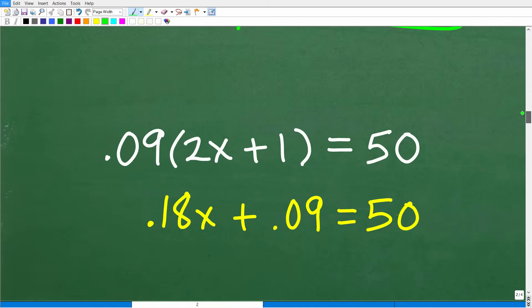9% of 2x plus 1 is 50 is equal to the algebraic equation 0.09 times 2x plus 1 equals 50. We have to take 9% and write it as a decimal, so that's 0.09 times whatever this number is. We're going to multiply 0.09 times 2x plus 1, and we know that the answer is equal to 50. Here is the equation that we want to solve. Let's go ahead and actually do that right now.